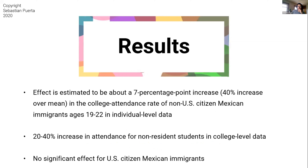Quickly summarizing the estimates: there is about a seven percentage point increase — a 40% increase over the mean — in the college attendance rate of non-U.S. citizen Mexican immigrants ages 19 through 22 in the individual-level data. In the college-level data, I see about a 20 to 40% increase in attendance for non-resident students. Most importantly, I conducted placebo tests and found no significant effect for U.S. citizen Mexican immigrants.